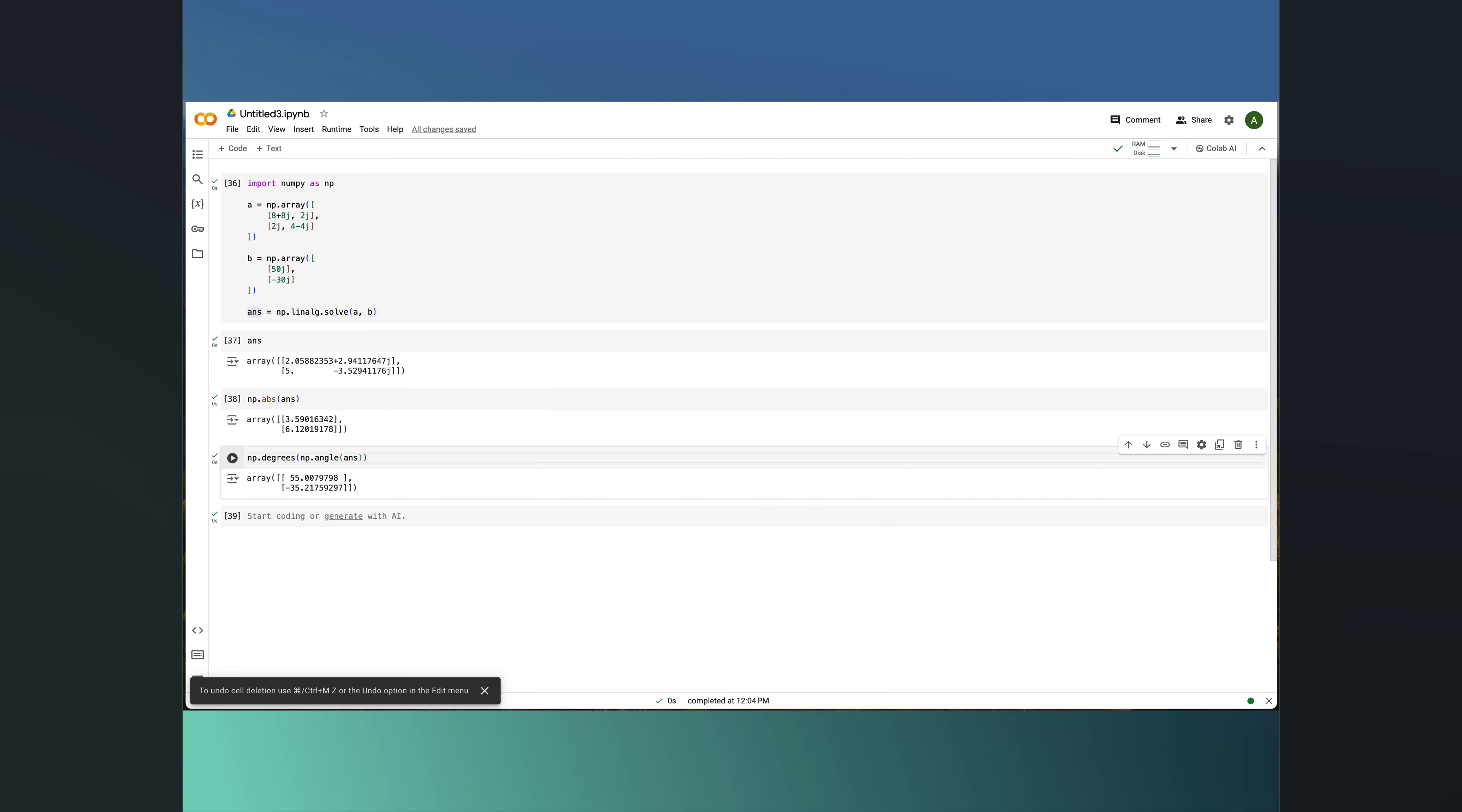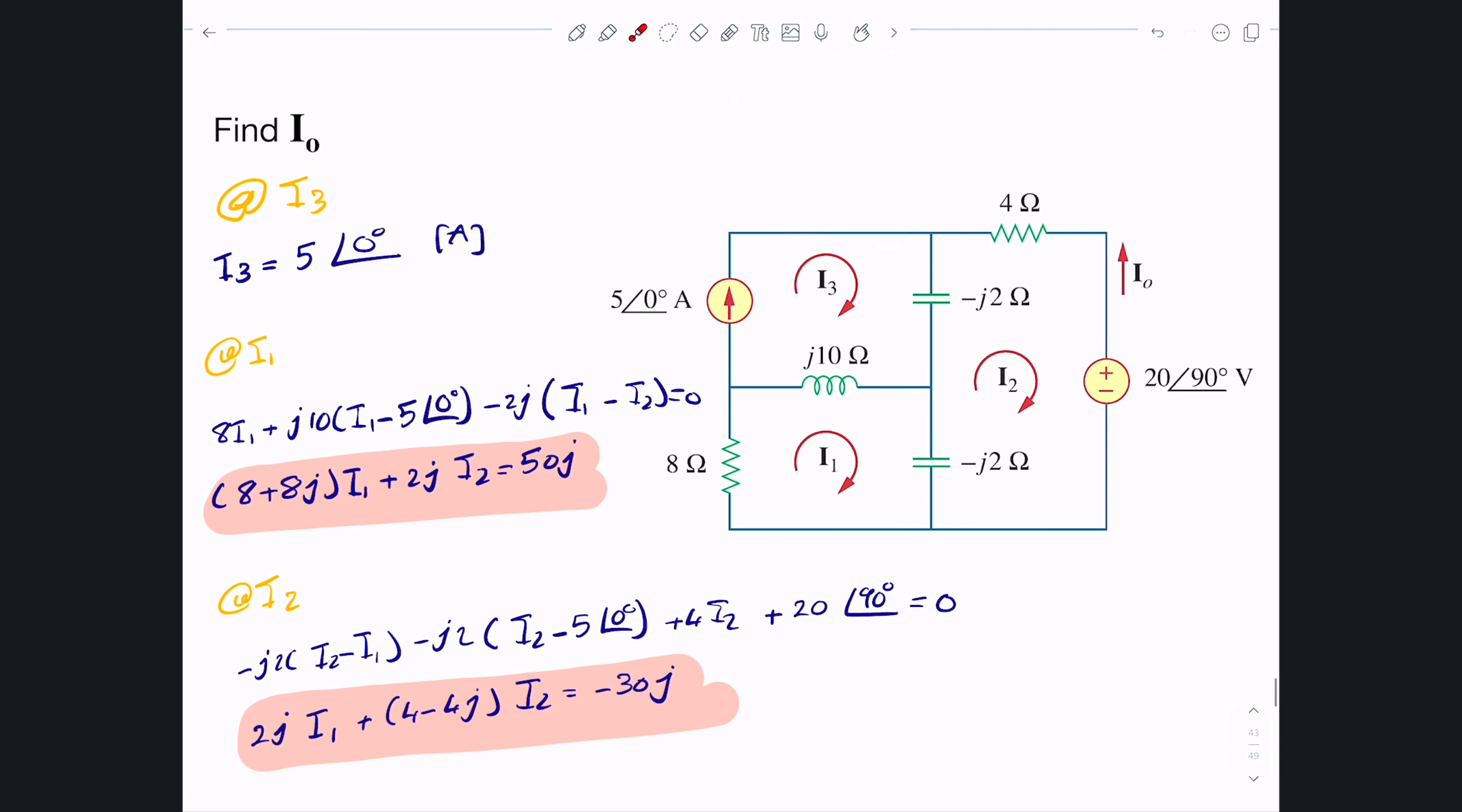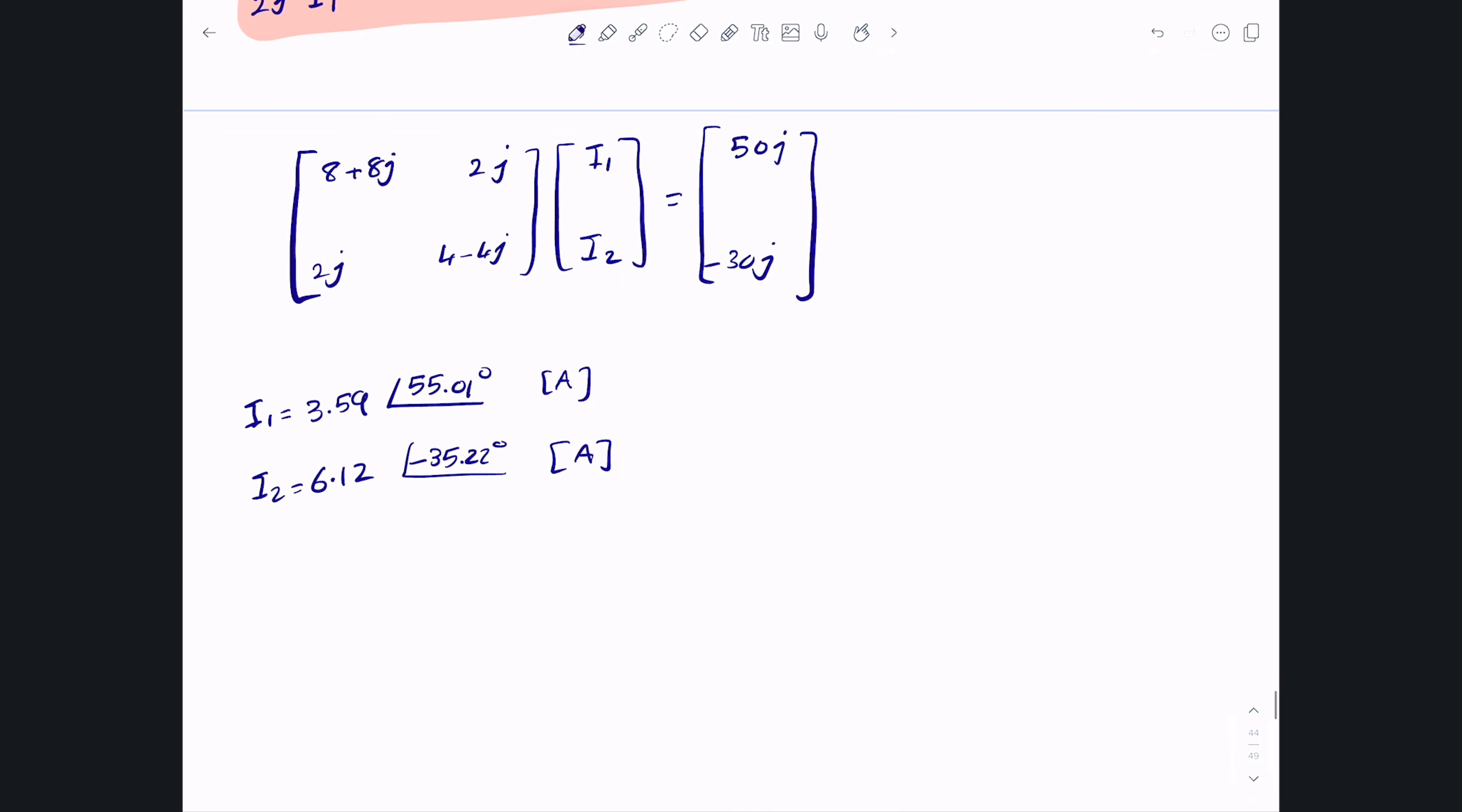I'll move these to my notes. I copied these solutions from Python to here, this is what I1 is, this is what I2 is in the phasor domain. Let's go back to the question. The question is not asking me to find I1 and I2, the question is asking me to find I0 which is here.